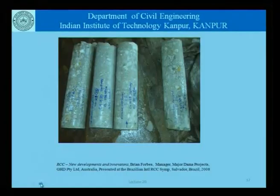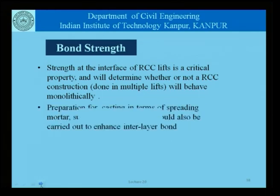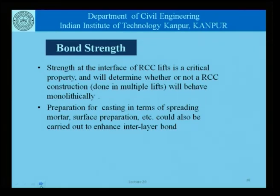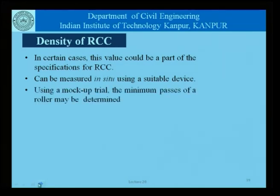Coming to bond strength — that is the strength at the interface of lifts — this is a critical property that determines whether RCC construction done in multiple lifts behaves monolithically. To ensure good properties across that interface, operations such as spreading grout or mortar before the next lift is cast, or surface preparation of the previous lift, can be carried out. Density has been discussed, and in certain cases its value could be part of the RCC specifications. It can be measured in situ using a suitable device, and using a mock-up trial the minimum number of roller passes may be determined.